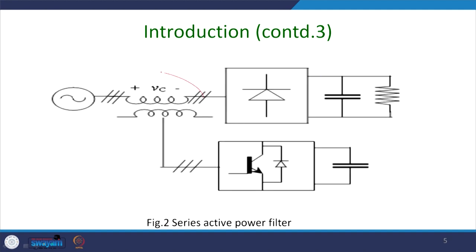Another variant is the series active power filter, where you inject the current and compensate for voltage sag or swell by injecting voltage in phase. This aspect we have covered in the series portion of the UPQC in detail. Our lecture will concentrate mainly on the shunt, but as far as topology is concerned, you can also clear harmonics, sags, and swells by series injection.